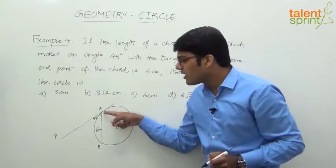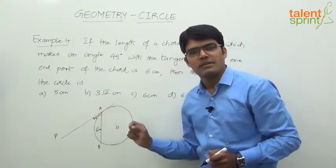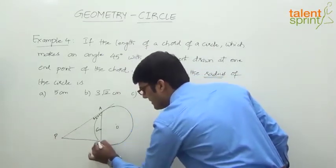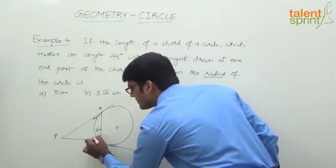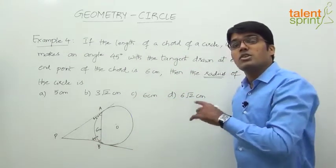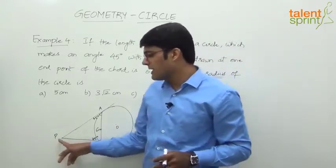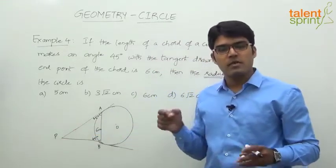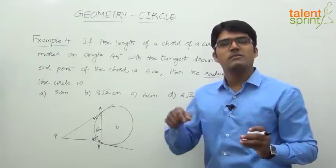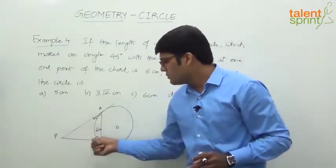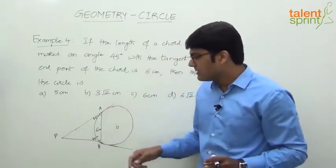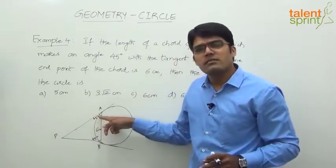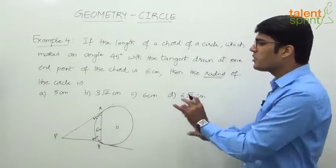Now, if we draw another tangent at the other end point B, that angle will also be 45 degrees. This is based on the concept of equal tangents: from an external point P, the two tangents PA and PB are equal. Since PA = PB and the base AB is common, the triangles are congruent, so both angles are equal — 45 degrees each.